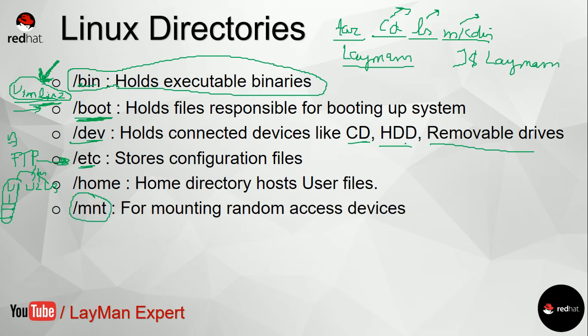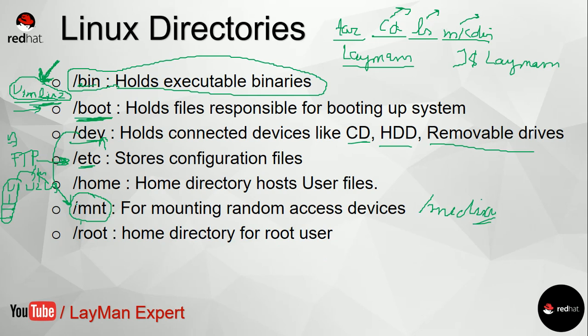/mnt is for mounting. Suppose you connect a pen drive — it would immediately be available in /dev, but it will not be accessible; you cannot access the file system or files stored on it. You have to mount that device to some folder with a file system, then you can access it. In modern Linux, inserting a pen drive will make it appear on your desktop, but if you want to see where it actually exists, open your terminal and list the /mnt or /media directory — you will find your pen drive mounted there.